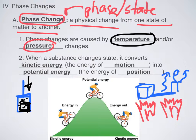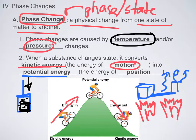Now, what happens when a substance changes state? What you're doing is you're converting kinetic energy — which is the energy of motion — into potential energy. Potential energy is the energy of position. So kinetic energy and potential energy are opposites, and yet they both help when we're dealing with how to change something from one state of matter to another.